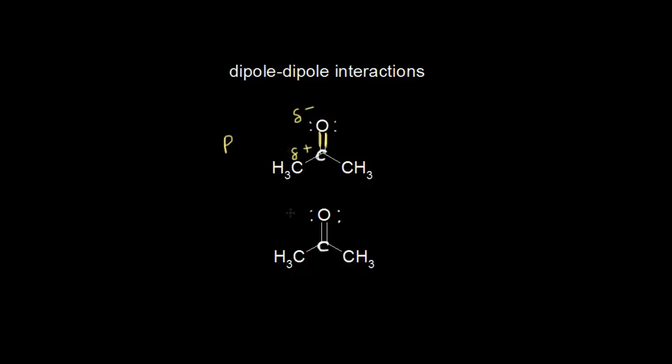The same thing happens to this acetone molecule down here — we get a partial negative and a partial positive, so this is also a polar molecule with two poles, making it a dipole. Each molecule has a dipole moment. Because each molecule is polar with a separation of positive and negative charge, opposite charges attract. This negatively charged oxygen is attracted to this positively charged carbon, creating an electrostatic attraction between the two molecules that holds them together. You would therefore need energy to pull them apart.